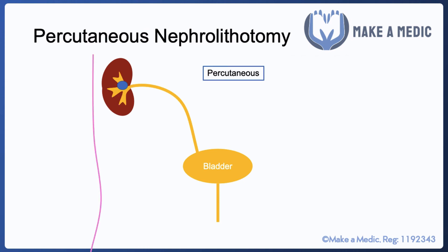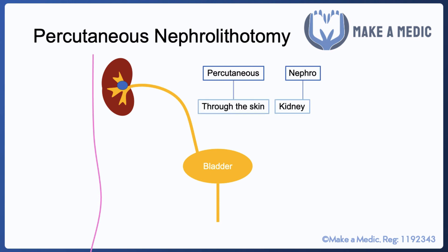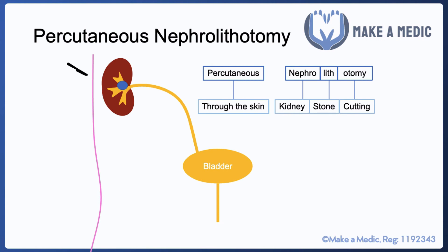Moving on to percutaneous nephrolithotomy: percutaneous means through the skin; nephro suggests it involves the kidney as opposed to the ureter; lith means stone; and otomy means cutting the stone out. So percutaneous nephrolithotomy is an approach in which you go via the skin into the kidney to extract a stone lodged within the kidney.